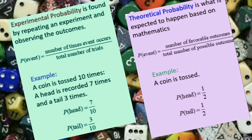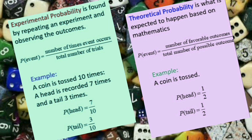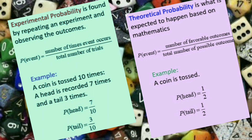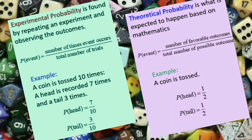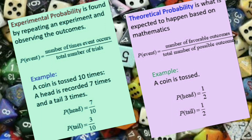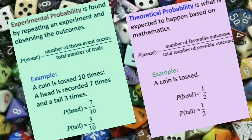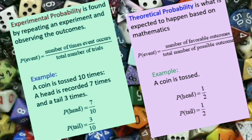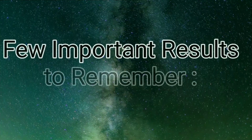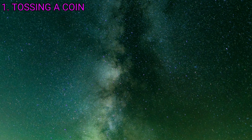For example, with experimental probability, the probability of heads is 7/10 and tails is 3/10, but if the experiment is performed again the result won't be the same. In the case of theoretical probability, we make certain assumptions like outcomes being equally likely, so no matter how many times a coin is tossed, the results are the same — probability of head or tail equals 1/2.